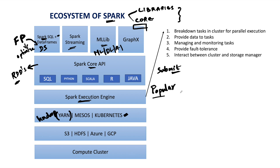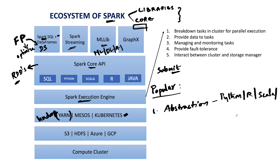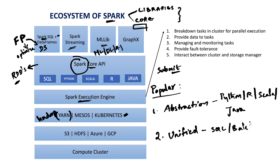The entire stack we have covered is the ecosystem of Spark. Now, why is Spark so popular? We already had Hadoop MapReduce and HDFS, but why is Spark so popular? The first reason is the abstraction available in Spark — you can use any of the programming languages like Python, R, Scala, and Java, and the rest of the things like cluster management, storage, parallelism, failures, and fault tolerance will all be taken care of by Spark. The other reason is that Spark is a unified engine — we can use SQL queries, batch processing, streaming processing, machine learning algorithms, and graph algorithms all within a single framework.